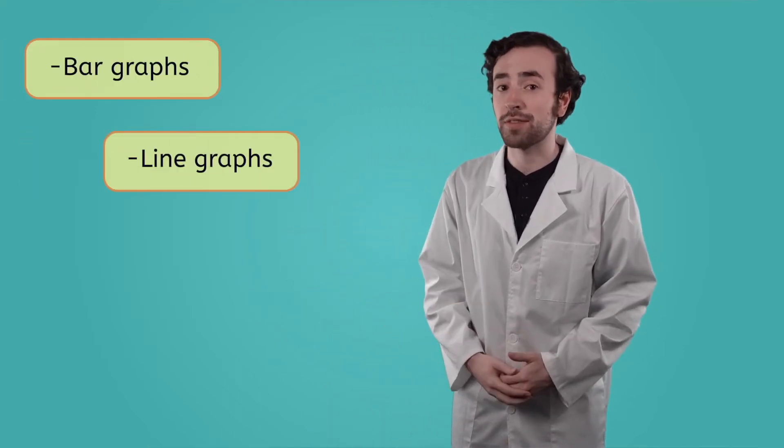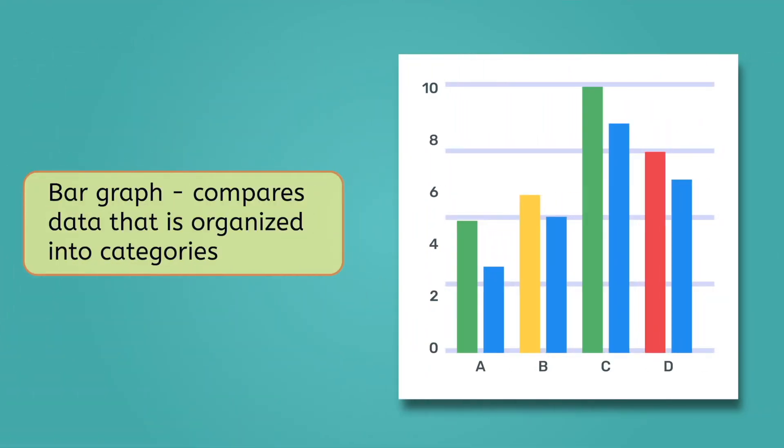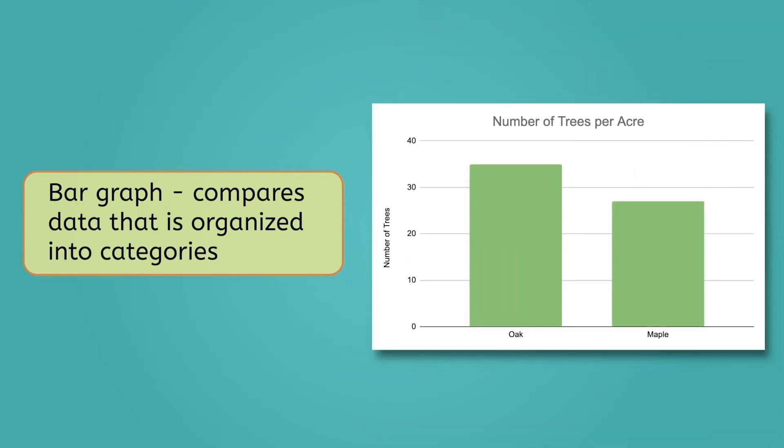There are three common types of graphs that scientists use: bar graphs, line graphs, and pie charts. A bar graph is a way to compare data that's organized into categories. For example, if I was comparing the number of different types of trees in my neighborhood, I might use a bar graph to show how many of each there are.